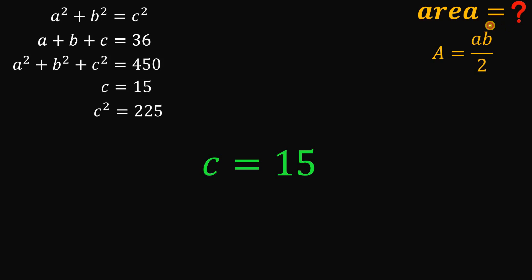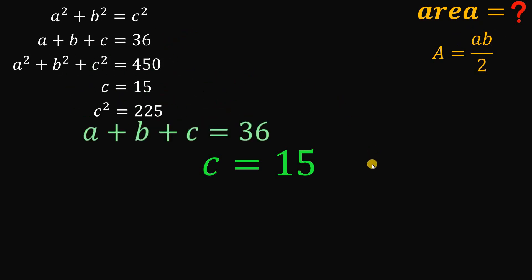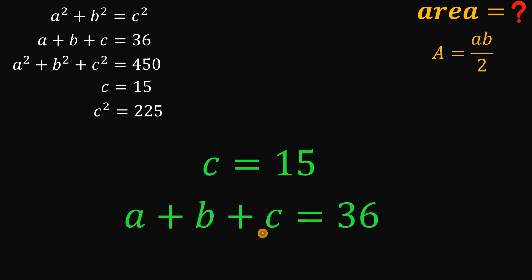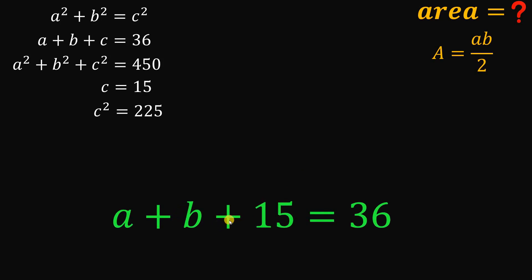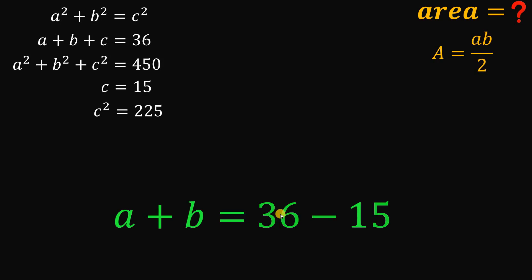We now know C equals 15 and C squared equals 225. But we want A and B. Using the first equation, A plus B plus C equals 36, and since C equals 15, we substitute to get A plus B equals 36 minus 15, which equals 21.